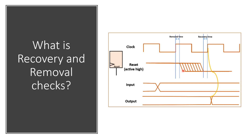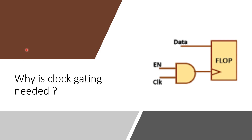Coming to the last topic, we will discuss briefly what clock gating is and its need. Clock gating is a common technique used to reduce clock power by shutting off the clock to modules. Here you have an enable signal and a clock signal — when the enable signal is high, there is a clock going into the flip-flops, and when the enable signal is low, the clock is gated to all your modules. There are specific checks in STA that need to be done for clock gating, but clock gating is one of the techniques used to reduce dynamic power. Thank you.